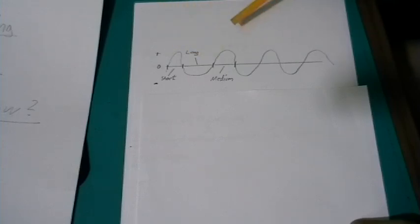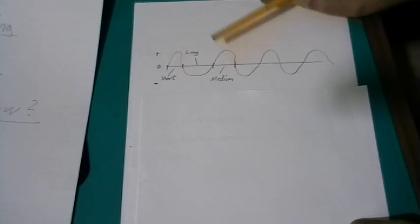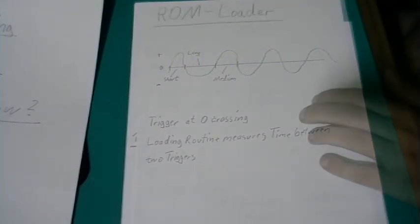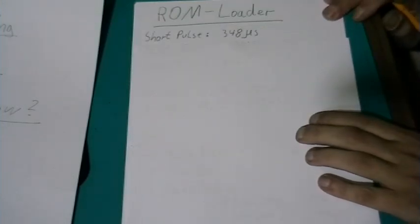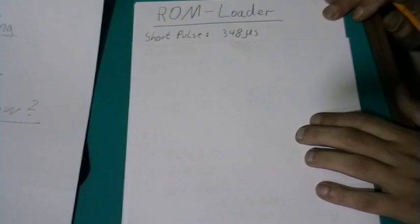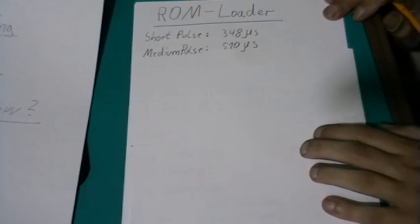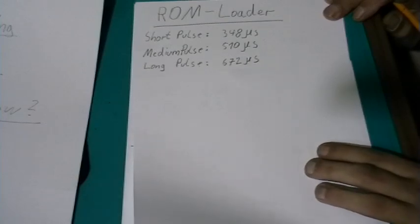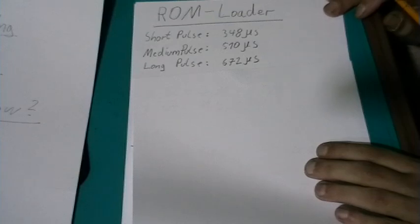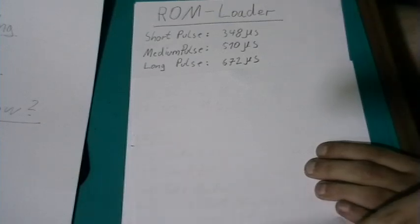So with the ROM loader we have a short pulse, a medium pulse and a long pulse. So how does the ROM loader work? Well as I mentioned before, we have three different pulses. A short pulse with a length of 348 microseconds, a medium pulse 510 microseconds, and a long pulse 672 microseconds.